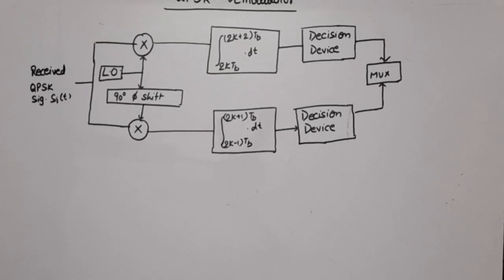The input of this receiver is the received QPSK signal, and this input is applied to two synchronize correlators or product modulators. This is coherent demodulation.